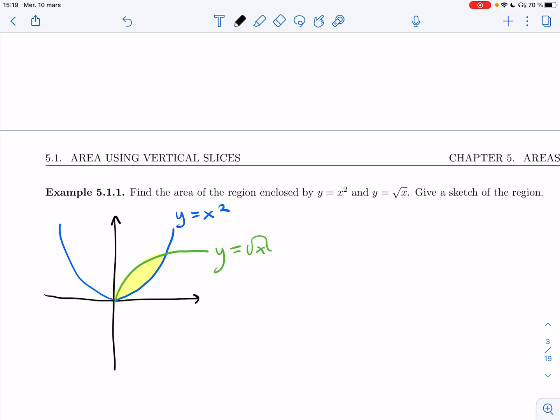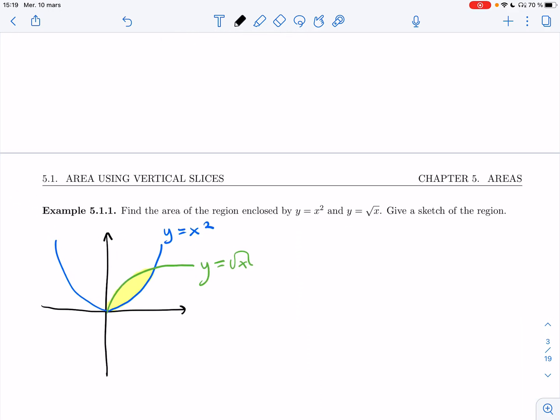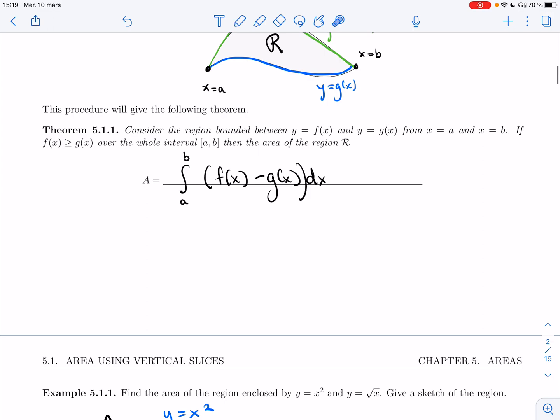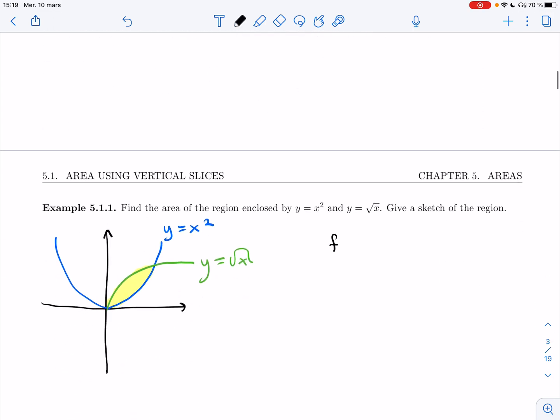So over that region, f, which has to be the bigger one, is going to be the green curve. And then the smaller one is going to be x squared.